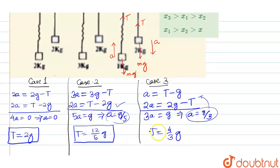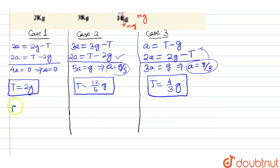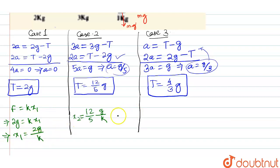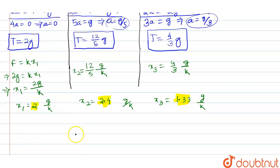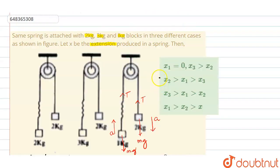The force on the spring in Case 1 is F = k·x1, which equals the tension T = 2g, so x1 = 2g/k. Similarly, in Case 2: x2 = (12g/5)/k, and in Case 3: x3 = (4g/3)/k. Since k is the same in each case (same spring), comparing the values of x1, x2, and x3, we can say x2 > x1 > x3. This is the answer, and the correct option is B.